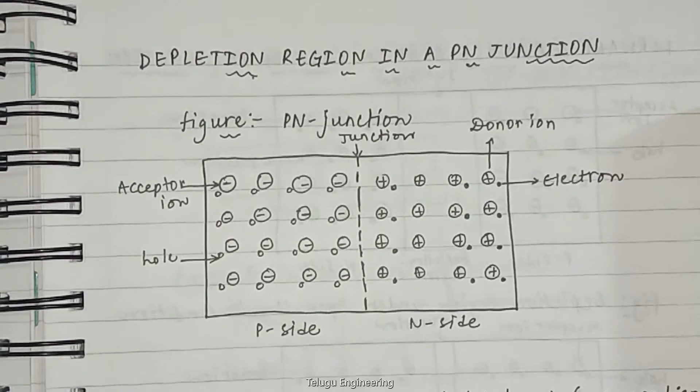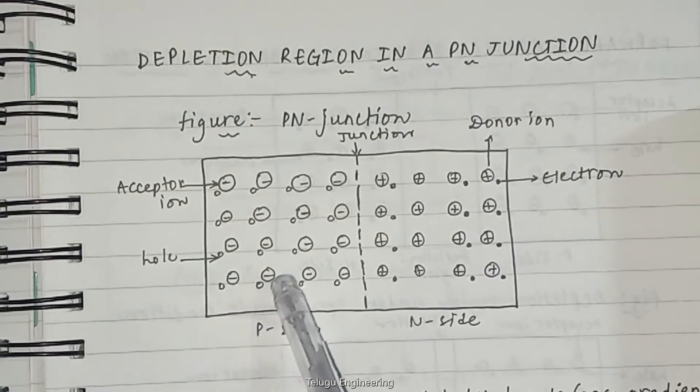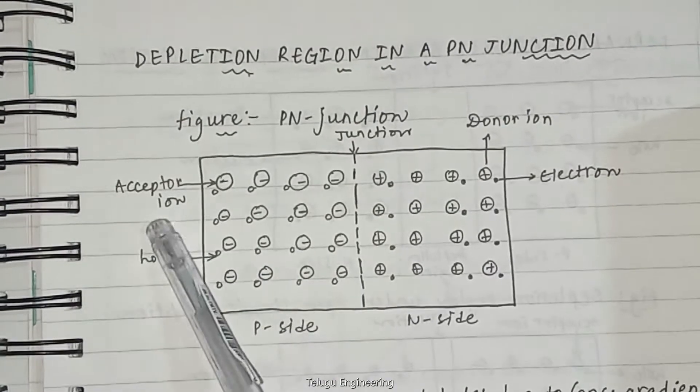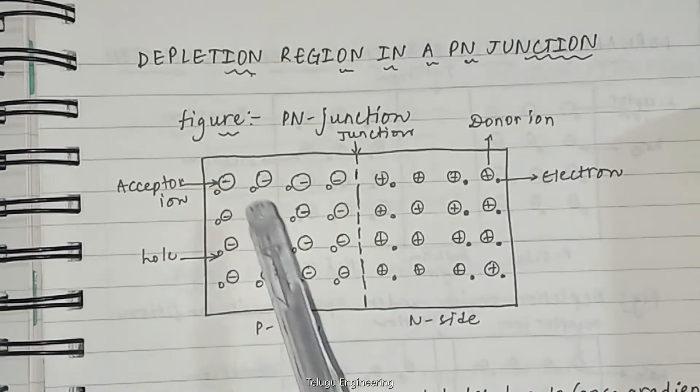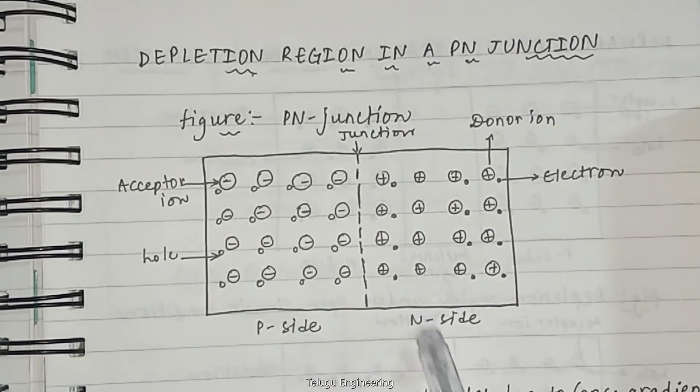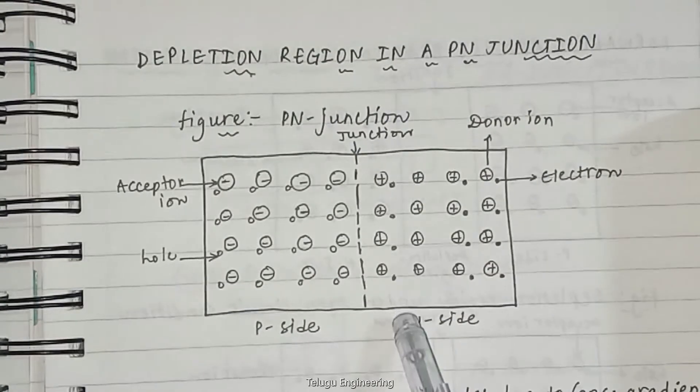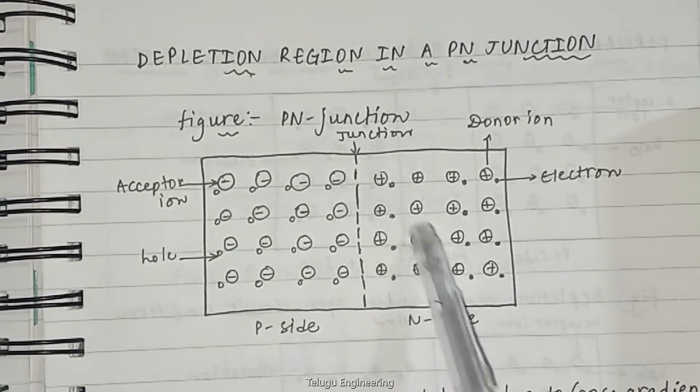The part of the semiconductor doped with P type impurities has holes as majority carriers and acceptor ions that are charged negatively. Similarly, the N type part has electrons as majority charge carriers and donor ions that are positively charged.